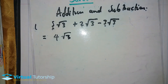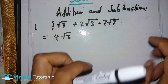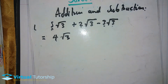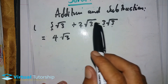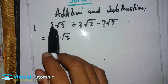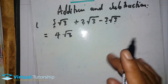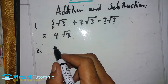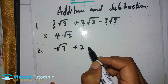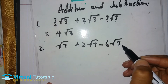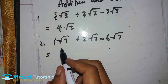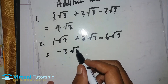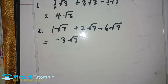What's common about those like terms is the square root of 3, so the result is 4√3. Let's do another example: √7 plus 2√7 minus 6√7. That's 1 plus 2 minus 6, which gives minus 3, so the answer is minus 3√7.